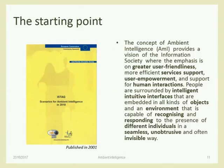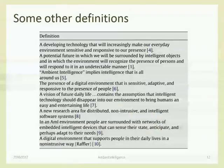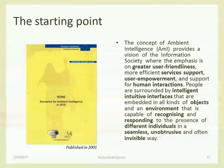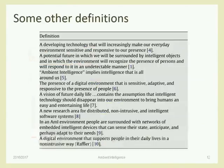In that report there was no specific definition, but they described a new society in which the environment was more user-friendly, allowed easier interactions, user interfaces would be more intuitive and more intelligent, and especially all kinds of objects and the environment itself could recognize and respond to the presence of individuals. This is not really happening today yet. There were various definitions and variations during the years describing what ambient intelligence is.